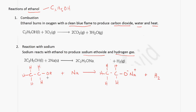Now to balance the equation, we have to put 2 here, 2 in front of sodium, and 2 here. The sodium is replacing the hydrogen atom. So therefore what we get is sodium ethoxide, which is this compound here.